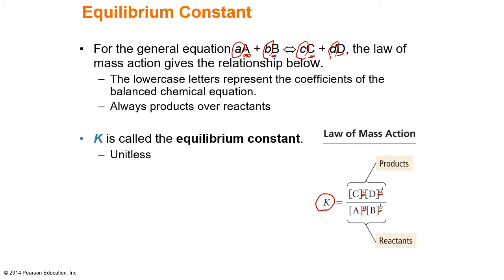Notice that when we're writing our law of mass action, this is different from when we looked at kinetics and had to figure out the orders experimentally. For the law of mass action, those exponents are equal to the coefficients in front of our balanced chemical reaction. It is always the products over the reactants — the concentration of the products divided by the concentration of the reactants.